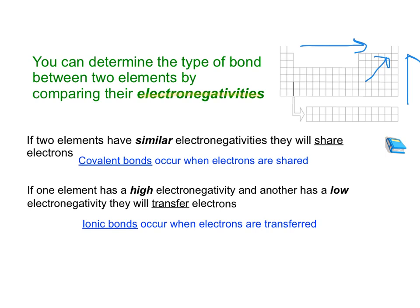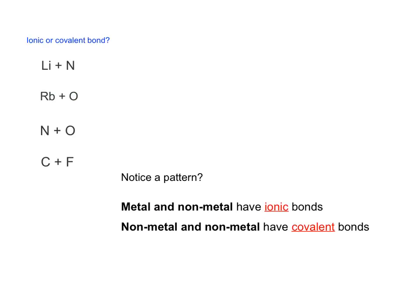So there are two different types: covalent bonds, which happen when there are similar electronegativities, and ionic bonding, which happens when you have an element with high electronegativity and another with low electronegativity. For the next part, you will need a periodic table to look at two elements and determine whether it's going to be an ionic or covalent bond.